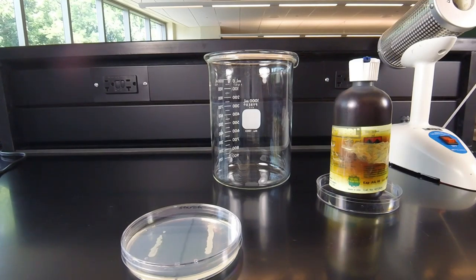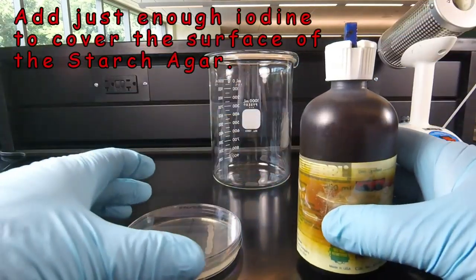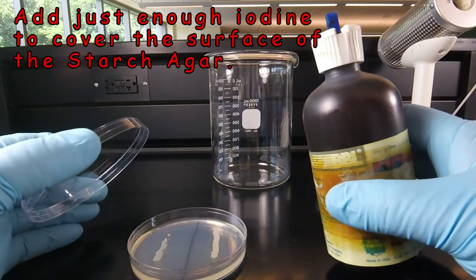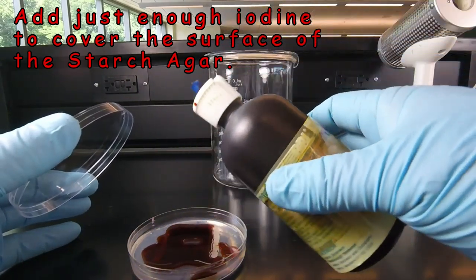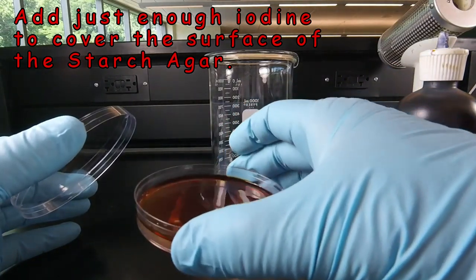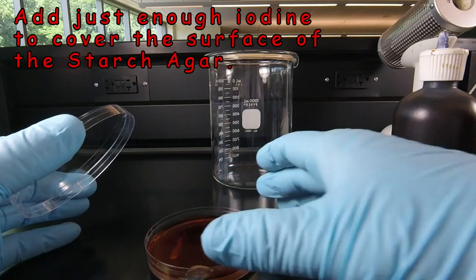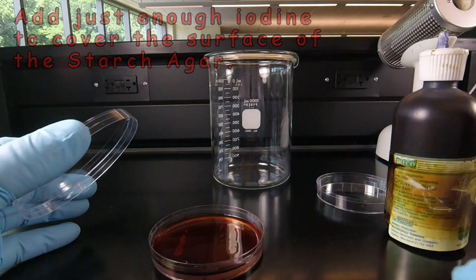So the first thing we have to do is add the iodine to the petri plate. We're going to add enough iodine to just cover the surface of the agar. So we squirt some iodine on the plate, swirl it around a little bit, make sure that it covers the plate. We don't want to add any more than we really need to just cover the agar surface.